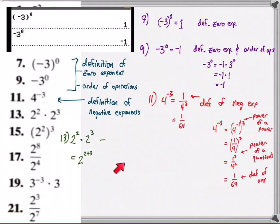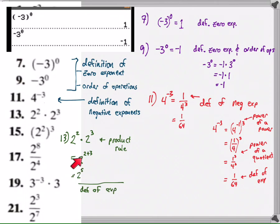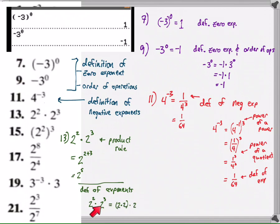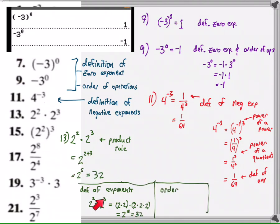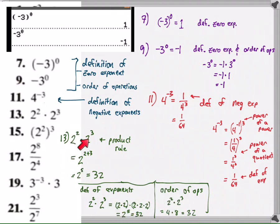Here's number 13 as another example of that secondary method. First, the shortcut: if you have 2 squared times 2 to the third, you should recognize that's a total of 5 sets of 2 — that's called the product rule. Then a longer method to demonstrate why: definition of exponents says 2 squared is 2 times 2, and 2 cubed is 2 times 2 times 2. Multiply all five twos and you get 2 to the fifth, which is 32. Alternatively, order of operations says take the exponents first: 4 times 8 is 32.